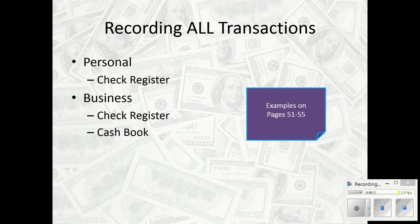Businesses have a check register but they also have what's called a cash book, and I'll teach you more about that as we get into our checkbook activities and payroll — it's just a bit more of a paper trail. Online is probably the most common way to manage checks, but you may have seen people use what are called duplicate checks — almost like a carbon copy underneath. You write the check, rip it out to give to whoever you're paying, and that carbon copy stays in the checkbook. They're great, but sometimes they fall out, so recording transactions is so, so important.